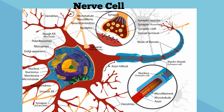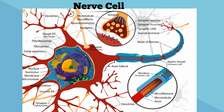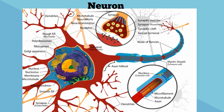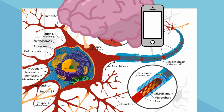Many nerve tissues are made up of nerve cells which are called neurons. Their job is to transmit electrical signals throughout the body. They allow your brain to communicate with your body.